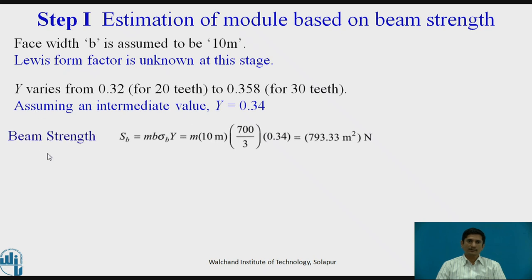The beam strength. SB equals MB sigma BY. M is not known. B is in terms of module. SUT is known. SUT upon 3 is sigma B. And Y which is assumed value. We can get beam strength in the terms of module. The torque with the help of this equation. MT equals 16 to 10 to the power 6 kW upon 2 pi NP. As all the terms are available, we can calculate torque equals 71619.93 Nm.